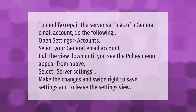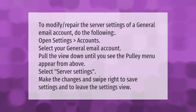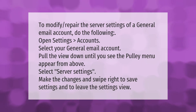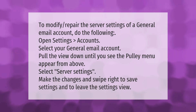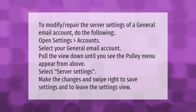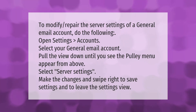To modify or repair the server settings of a general email account, do the following: open Settings, then Accounts, and select your general email account. Pull the view down until you see the pulley menu appear from above, then select Server Settings. Make the changes and swipe right to save settings and leave the settings view.